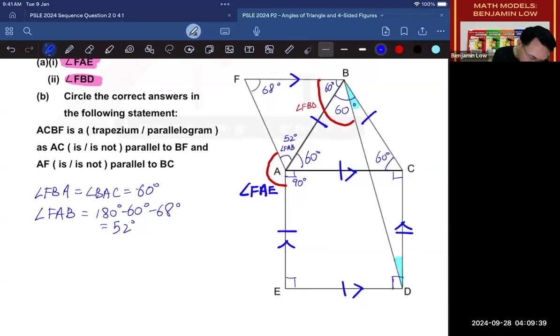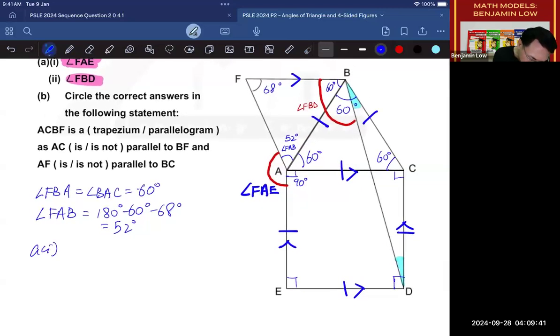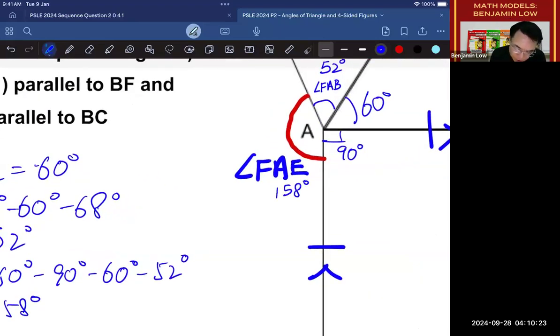Now, the total of all the angles here is 360 degrees, right? We call this angles at a point. So, if I take 360 minus this, minus this, minus this, I should get angle FAE. So, let's go ahead and do that. So, the answer, A part 1, angle FAE, I will take 360 minus 90 minus 60 minus 52. If you do that, that should give you 158 degrees. So, 158 degrees is the angle here. And we have solved one part of the question.